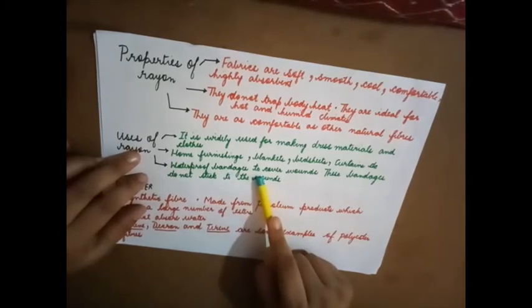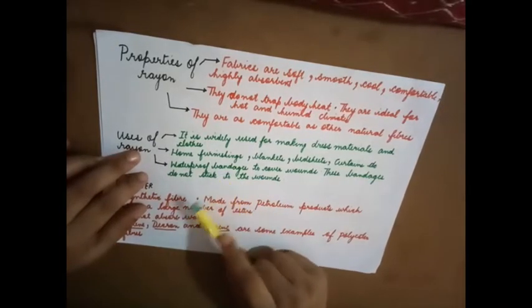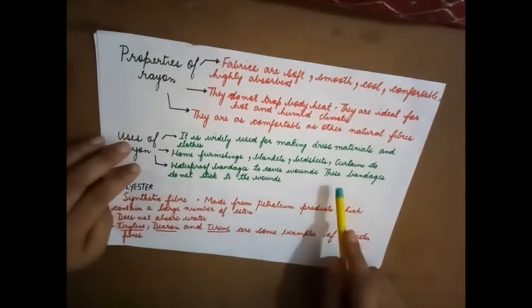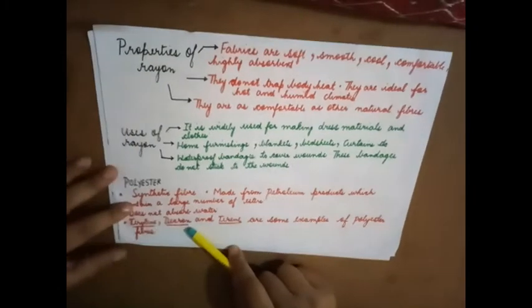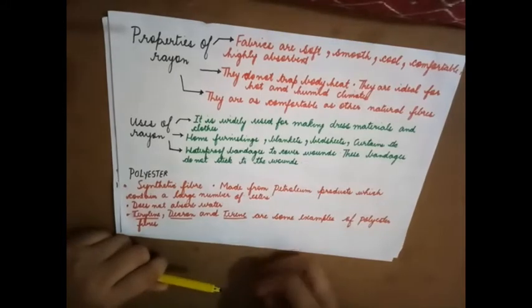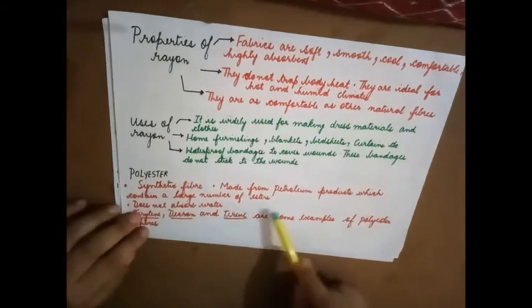They are also used to make waterproof bandages to cover wounds. Waterproof means it does not absorb water, it is water repellent. These bandages do not stick to the wound. Next, synthetic fiber is polyester.